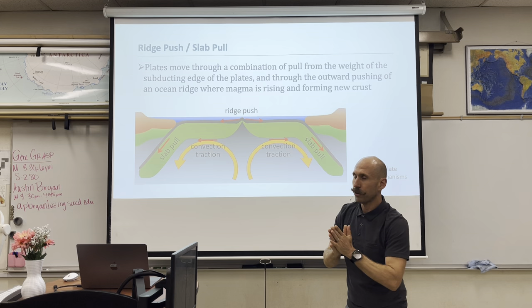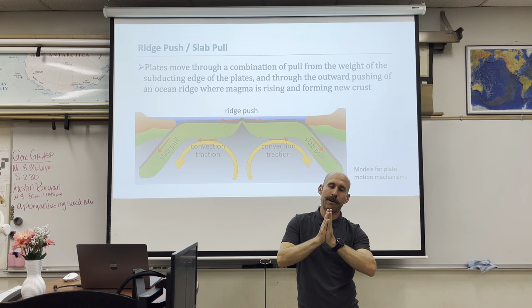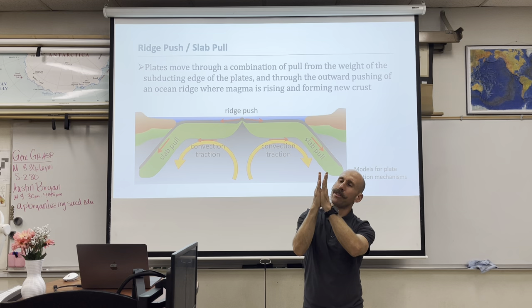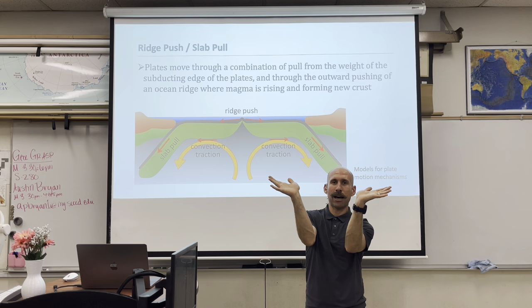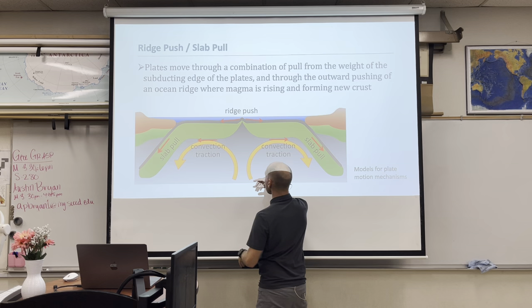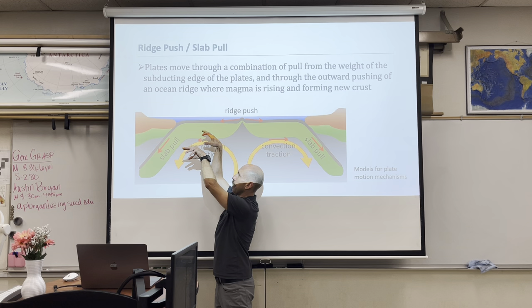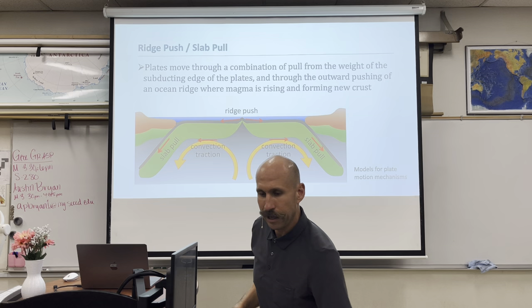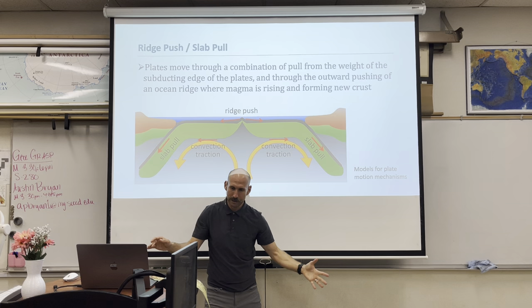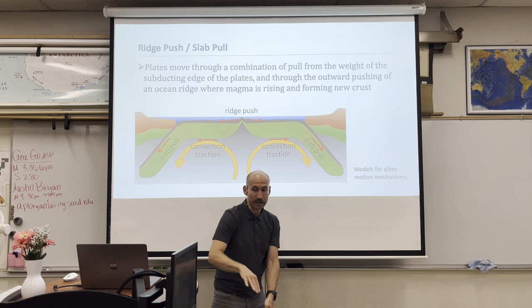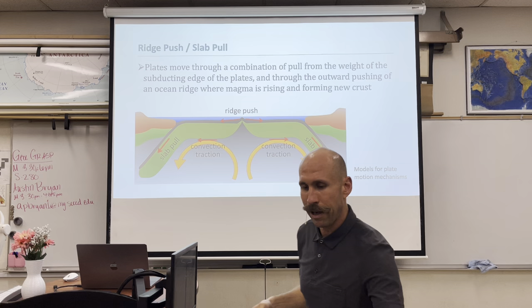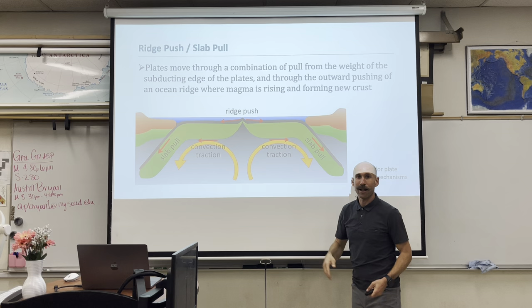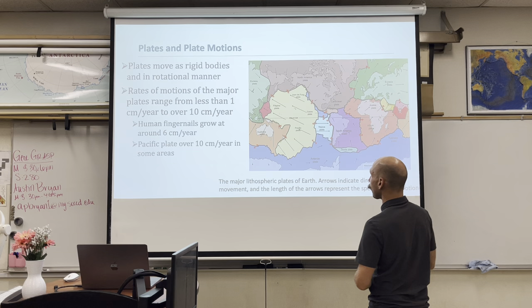Processes associated with mantle convection are ridge push and slab pull. At the mid-ocean ridge, mantle material comes up and literally pushes into the middle of the ocean floor, pushing surrounding material outward — that's ridge push. At a continental margin, a giant oceanic lithospheric plate subducts underneath another plate at a convergent boundary. It's like a blanket too close to the edge of a bed — the weight pulls it off the table. That's slab pull.